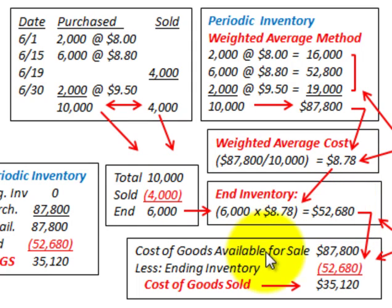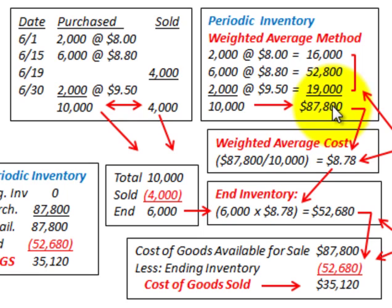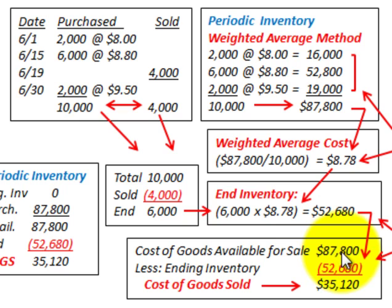To determine cost of goods sold, we take the cost of goods available for sale — $87,800 from our weighted average calculation — and subtract our ending inventory of $52,680. The difference, $87,800 less $52,680, gives us cost of goods sold for the period of $35,120.